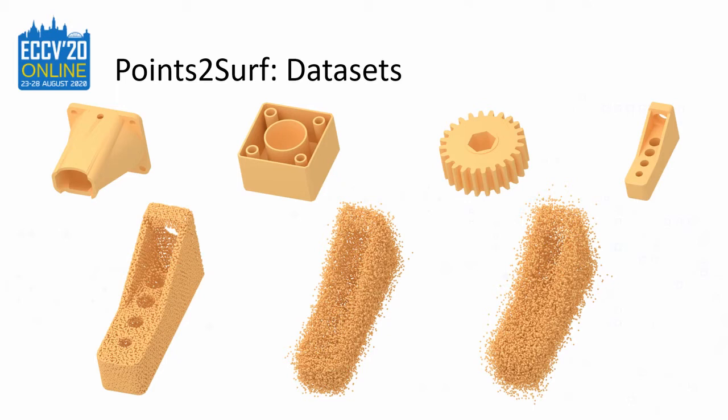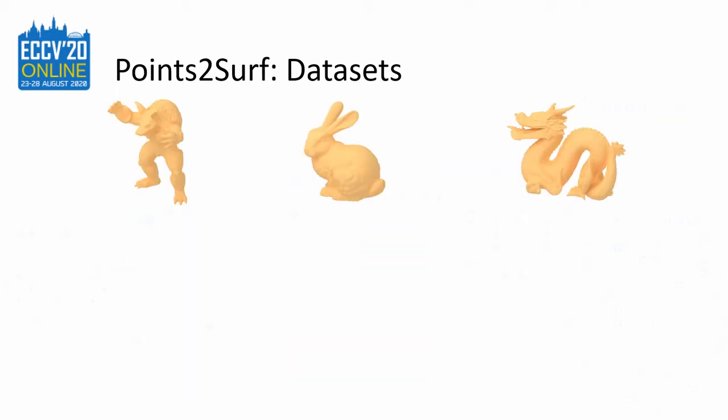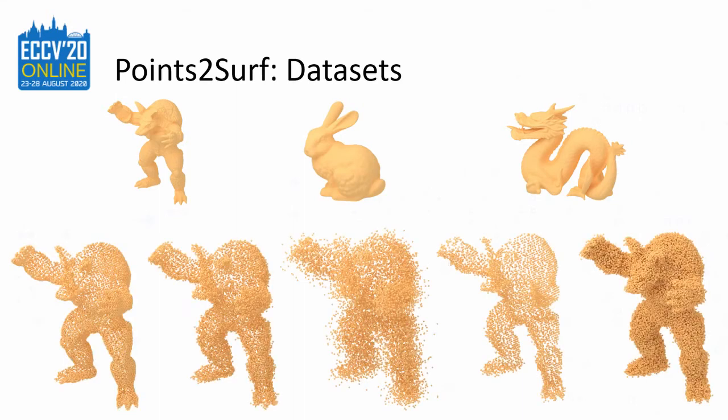Additionally, we take a random number of scans between 5 and 30 from random positions. Here are some examples from our test set. It consists of 22 well-known objects like the Stanford Bunny and the Armadillo. We made five variants of this dataset: no noise, medium noise, strong noise, sparse, and dense.